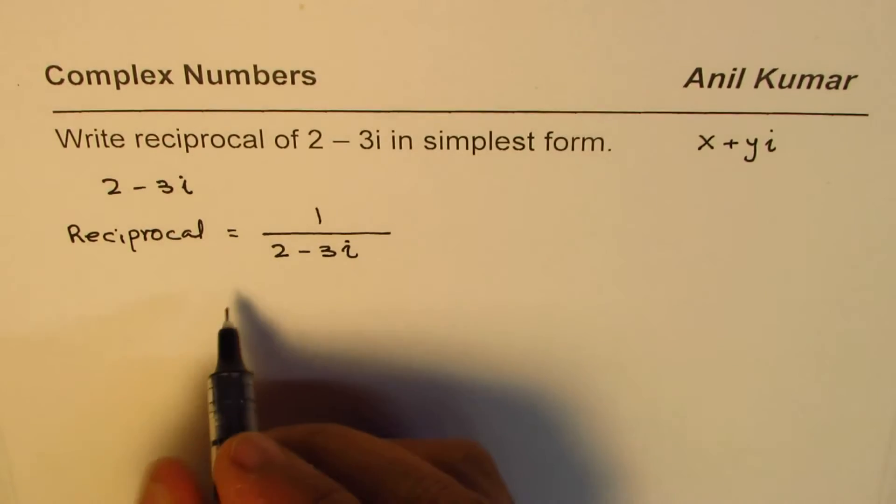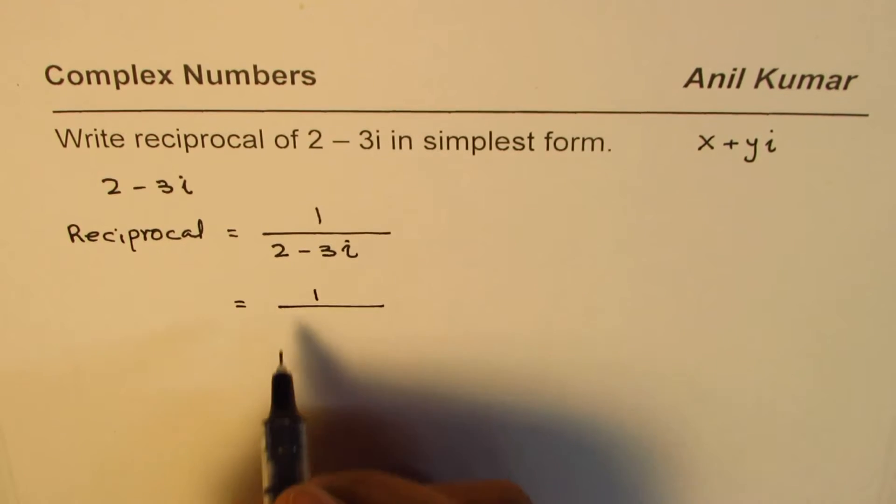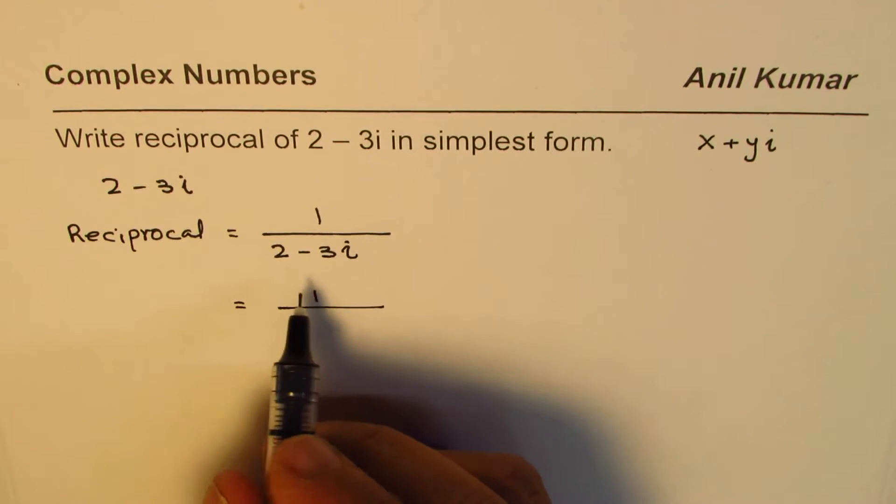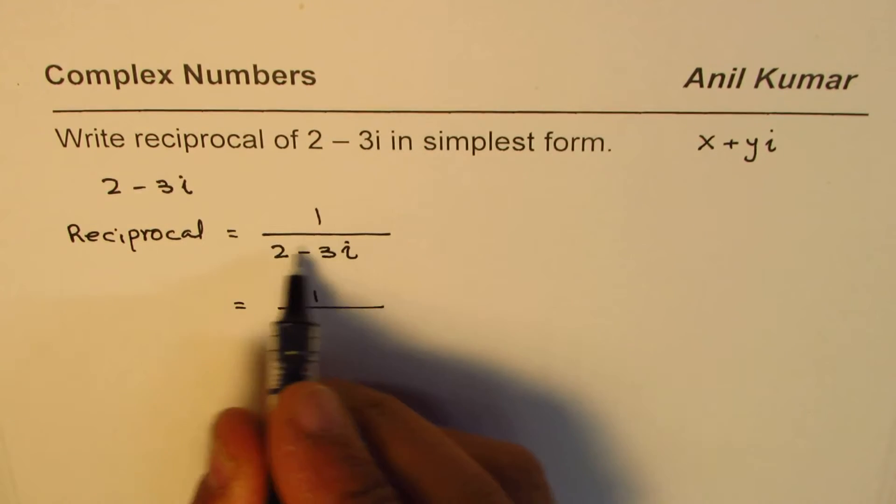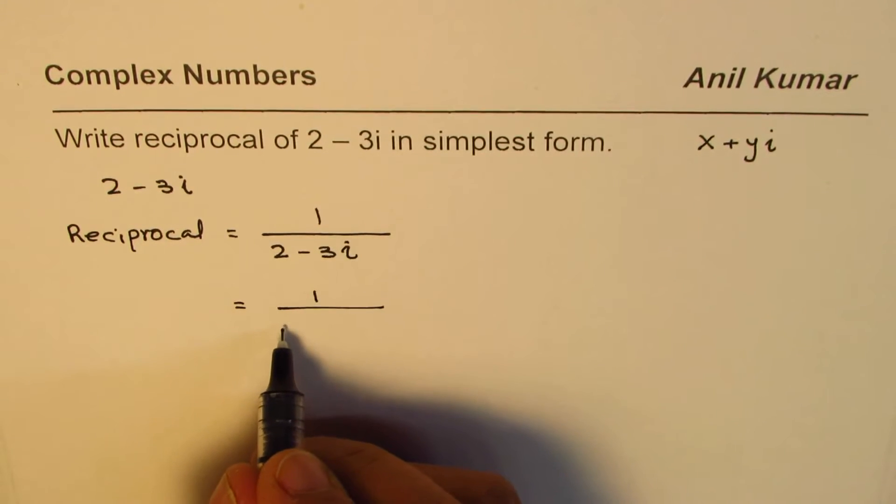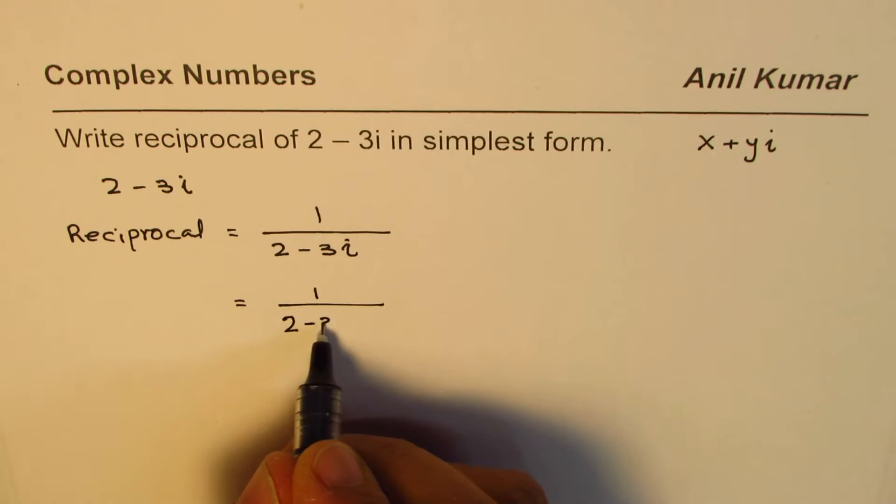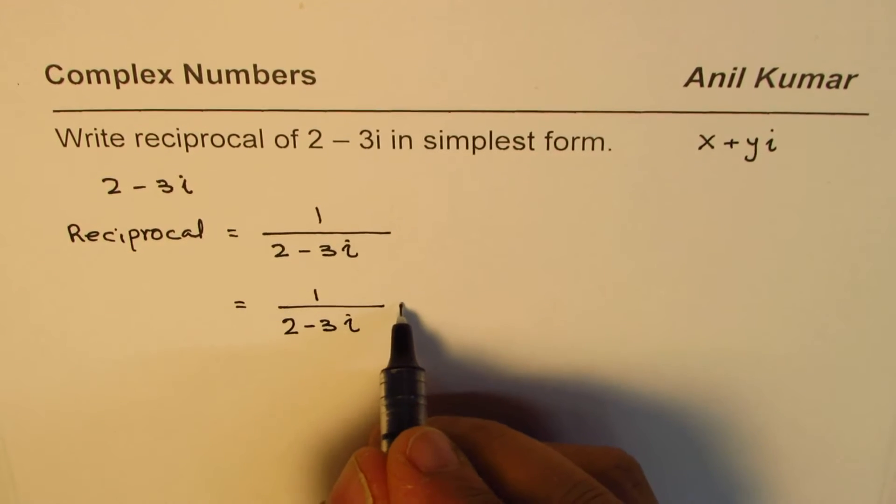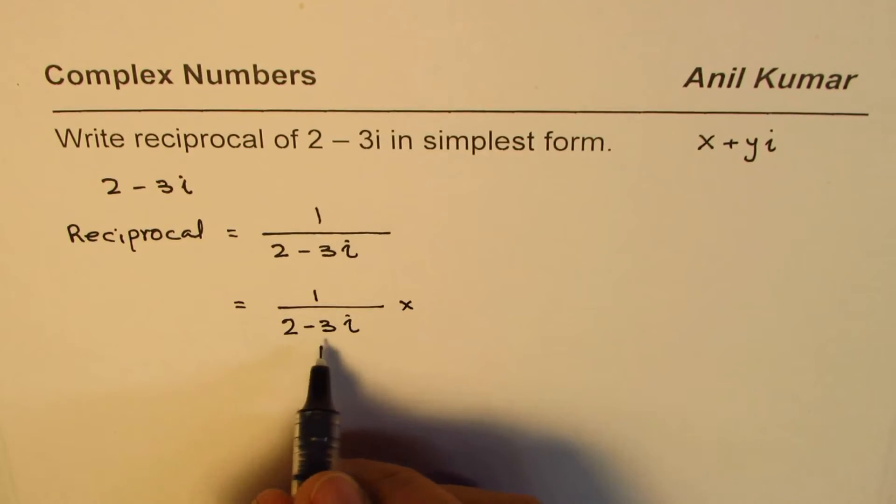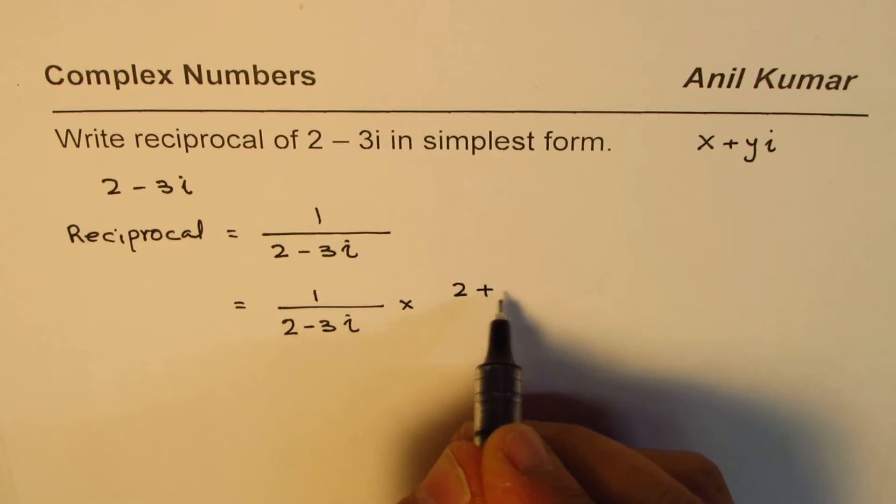Let me rationalize this number, which we normally say is realize it. We will make the bottom part, the denominator, a real number. 2 minus 3i. To make it real, we have to multiply and divide by the conjugate. So we will multiply and divide by 2 plus 3i.